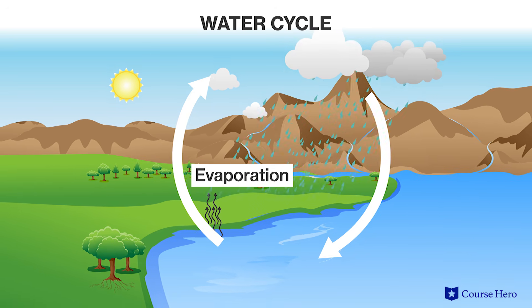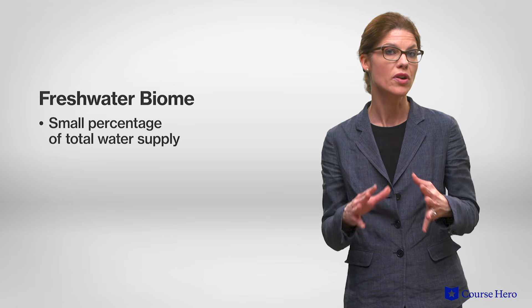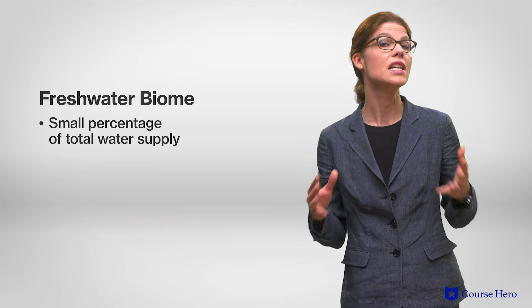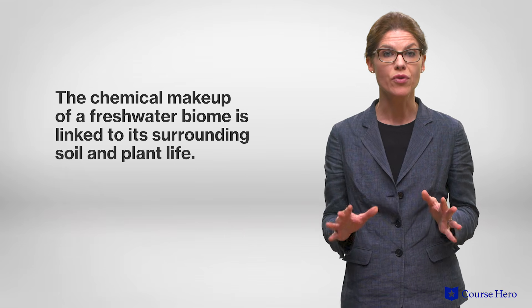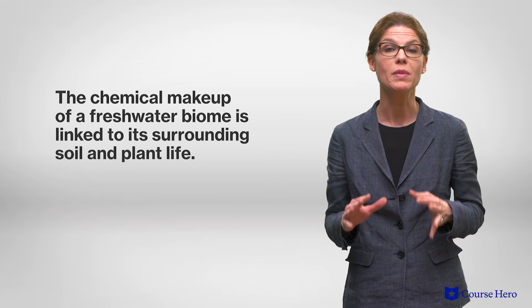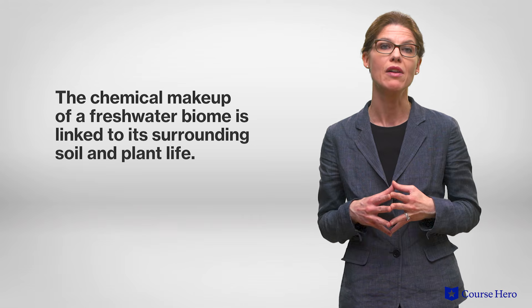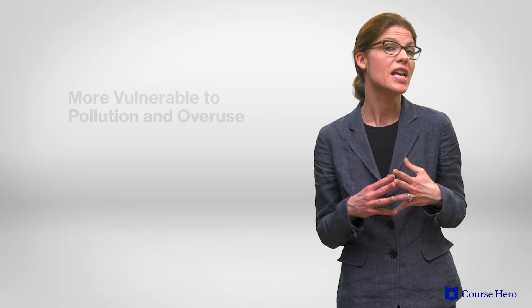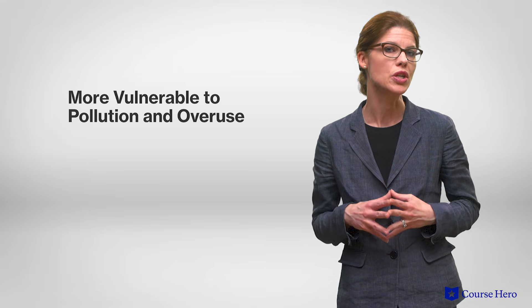Unlike marine regions, freshwater makes up a small percentage of Earth's total water supply and includes lakes, rivers, and wetlands. The chemical makeup of a freshwater biome is linked with that of its surrounding soils and plant life. The close proximity of freshwater biomes to human development makes them especially vulnerable to pollution and overuse.